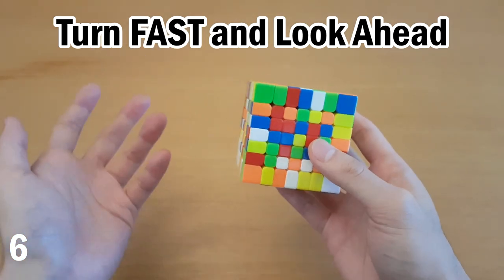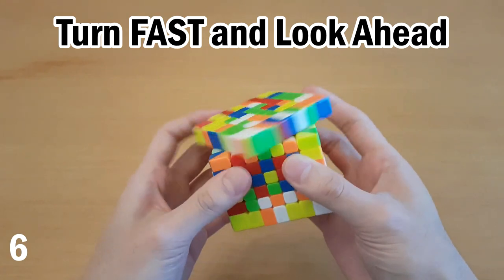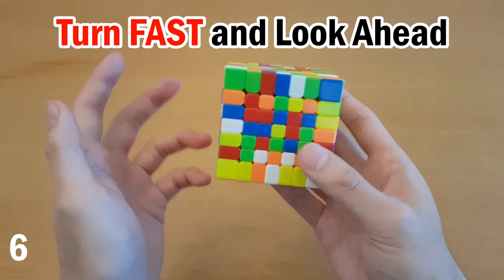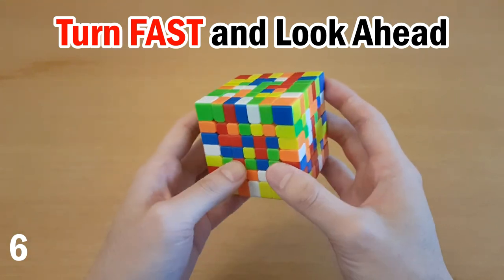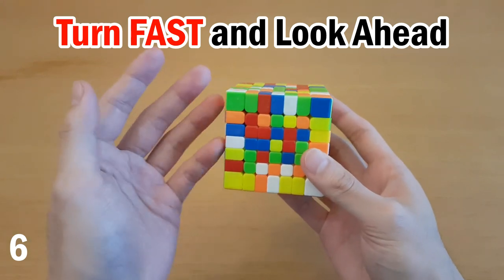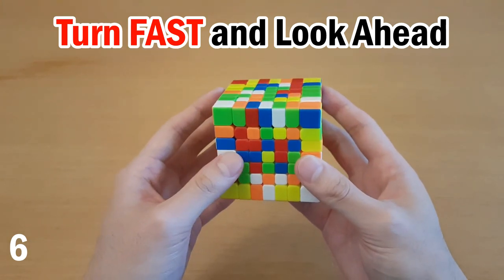The turn fast part doesn't really work unless you've lubed your cube really well, especially for seven by seven and six by six. A lot of people like to solve bigger cubes at a more relaxed pace because it takes a while and you feel like look ahead is super important. But if you actually try turning at your fastest, you may notice a huge difference. Maybe you were always faster than you thought you were.